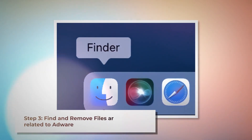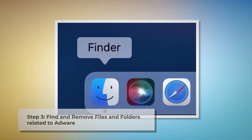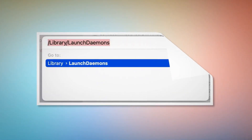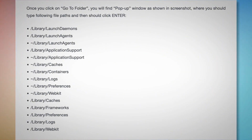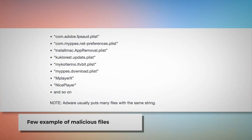Step 3: Find and remove files and folders related to adware. Make sure you are in the Finder folder. Once you are in the Finder folder, click Go at the top menu bar of your Mac, and then Go to Folder on the drop-down menu, as shown in the screenshot. Once you click on Go to Folder, a pop-up window will appear where you should type these file paths and click Enter: Library, LaunchDaemons, LaunchAgents, Application Support, and so on, as shown here. Look for suspicious or malicious files and move them to trash. A few examples of such malicious files are shown here. Note: adware usually puts many files with the same string.